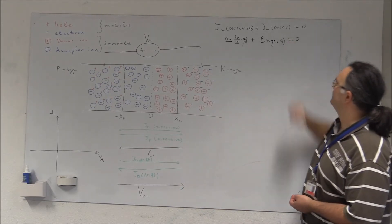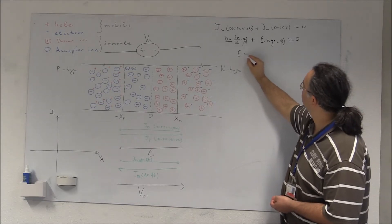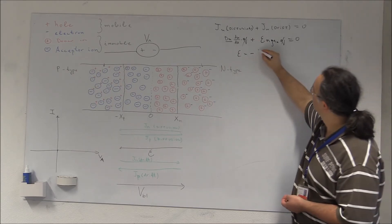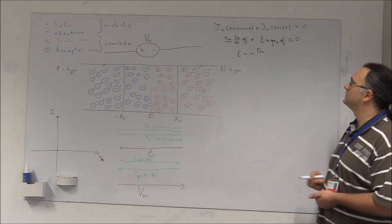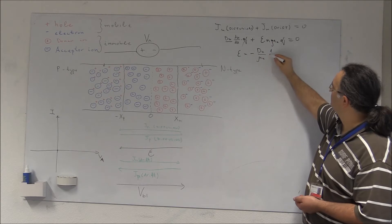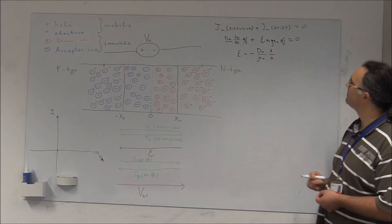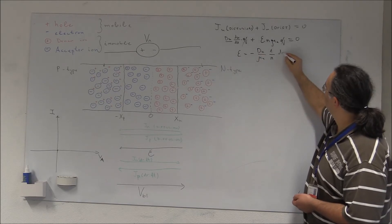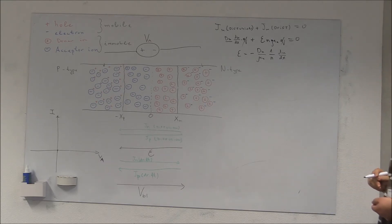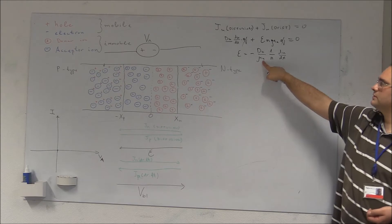Cancelling the charge Q from both terms, I can express the electric field as: E = −(Dn / μN) · (1/N) · dN/dx. This is the expression for the built-in electric field in terms of the electron concentration gradient.